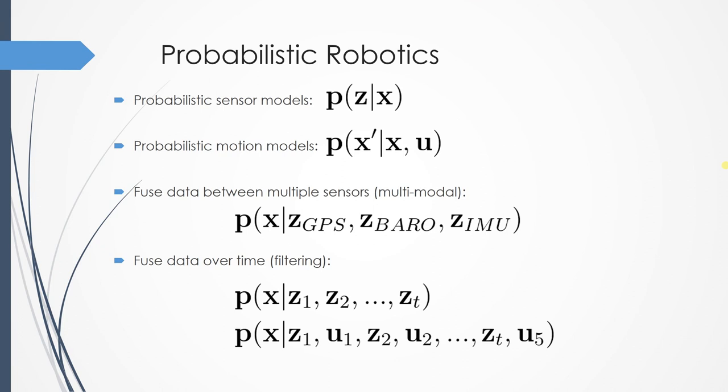We need to be able to fuse multiple sensors, so our state x will affect several sensors, such as the GPS measurements, the barometer measurements, the IMU, and so on and so forth. And we have to fuse all this data together over time, a process that is typically done through filtering.